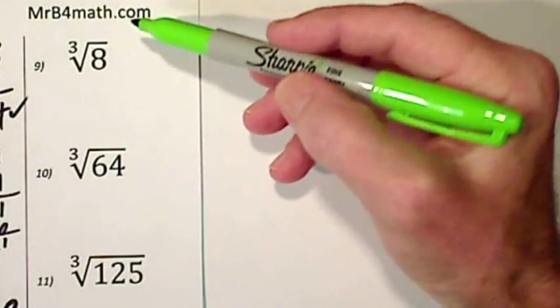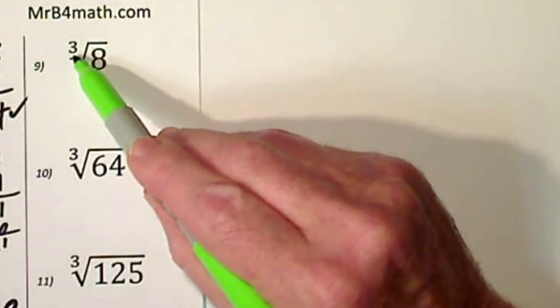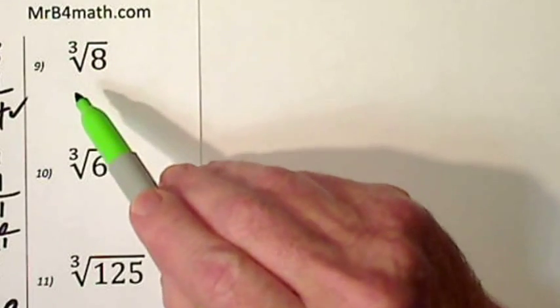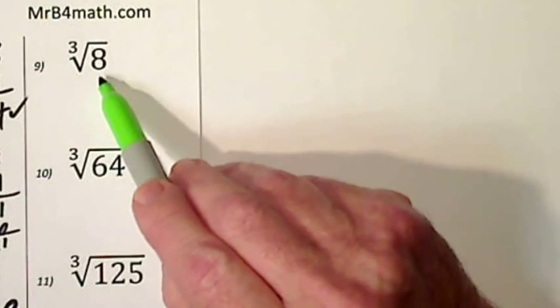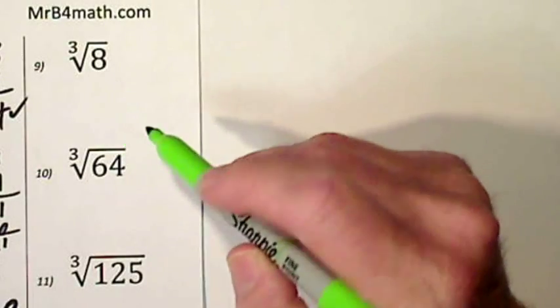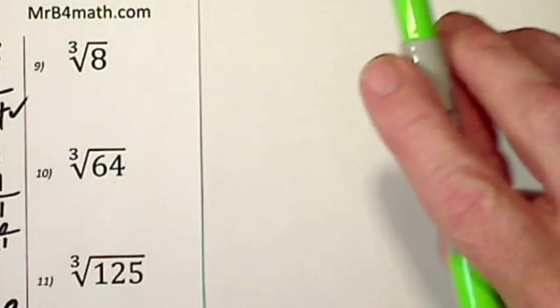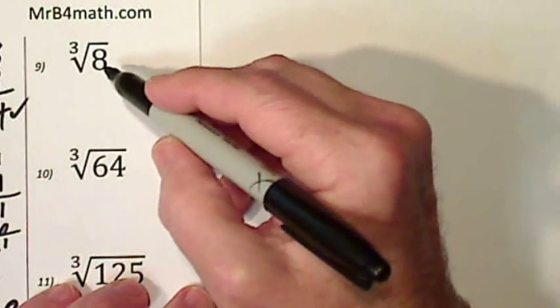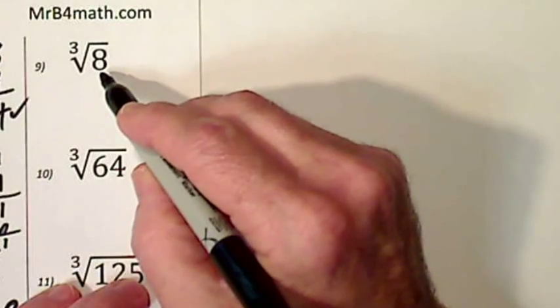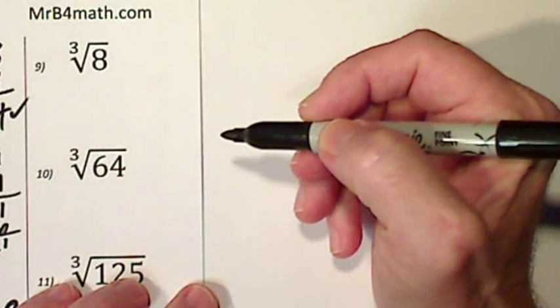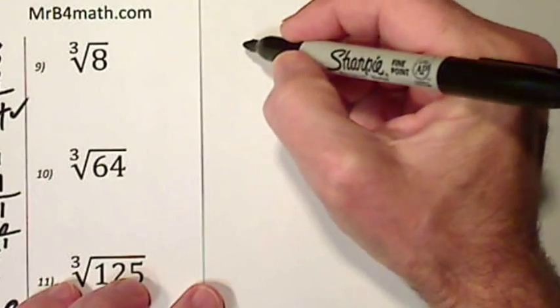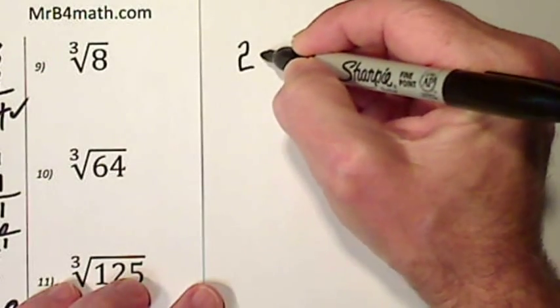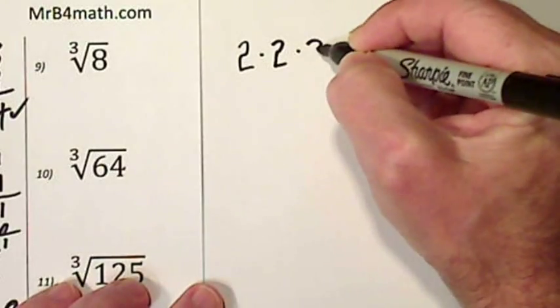Now the index is 3. And that says we're looking for the cube root of 8. The cube root of a number is the number times itself 3 times that gives you 8. So for instance, we'll start with something small. 2 times 2 times 2.